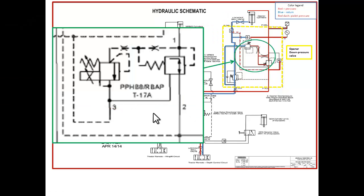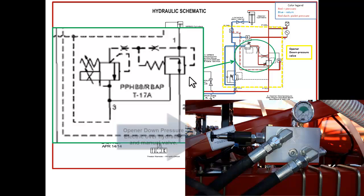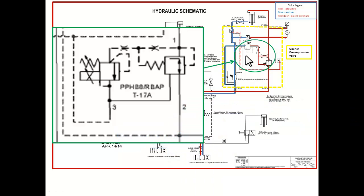To maintain opener down pressure, the pressurized oil is reduced by an electro hydraulic valve and a manual valve. They are all tied together on one valve stack. These are stacked together, labeled PPHB8/RBAP.